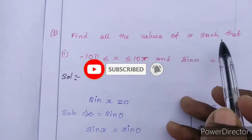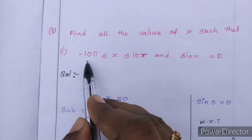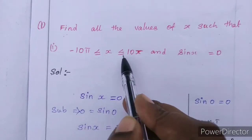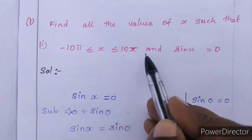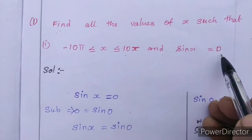Find all the values of x such that -10π ≤ x ≤ 10π and sin x = 0.